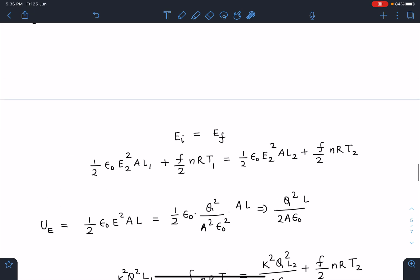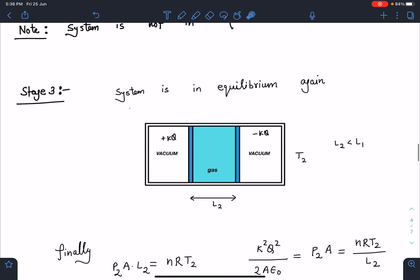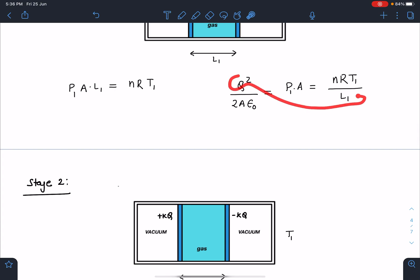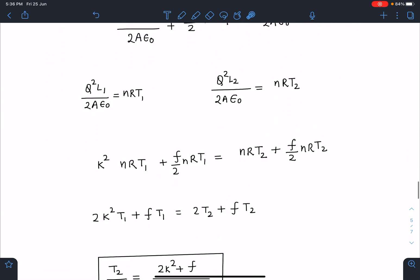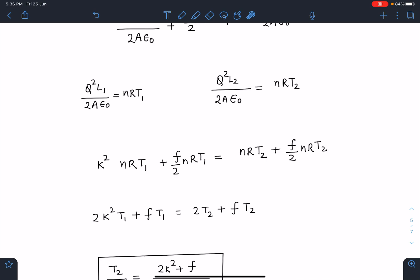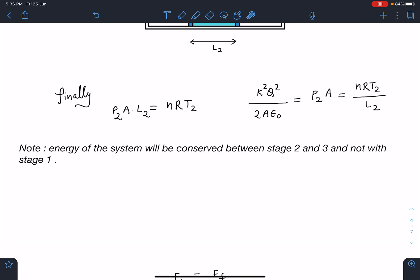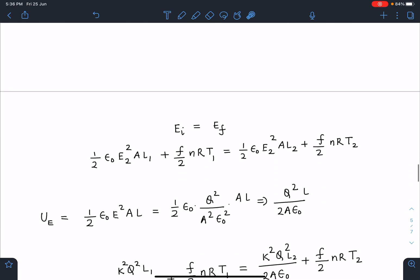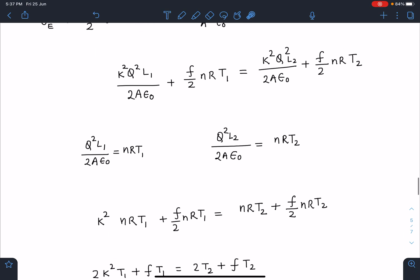So from this I can write here KQ squared L2. You can see KQ squared L1 by 2 epsilon not, sorry Q squared L1 by 2 epsilon 0 is NRT1. So this is what I am going to replace here: Q squared L1 by 2 epsilon not this is NRT1 and finally this is going to be Q squared L2, here I can write Q squared L2 by 2 epsilon 0 that is NRT2. By k here by k should come or k squared Q squared I can write here. There is one term I have missed.